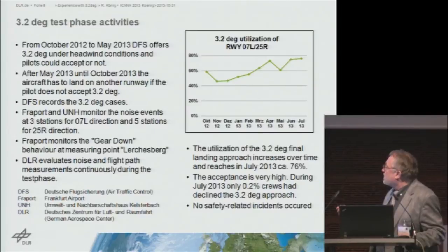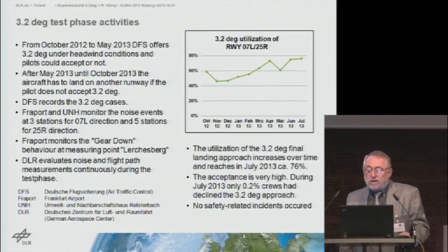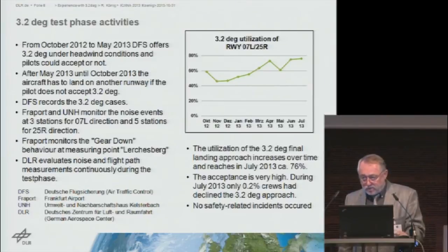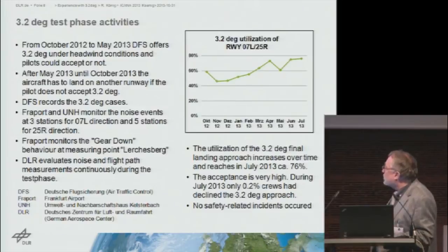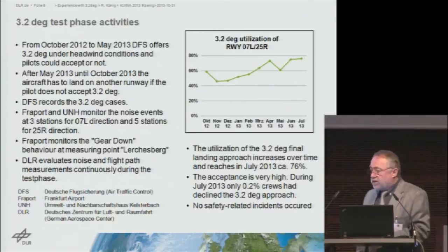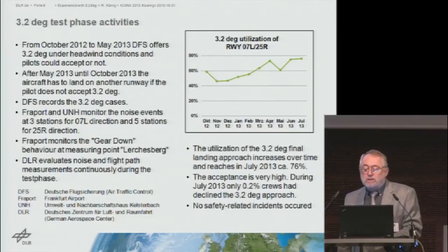Using the 3.2-degree angle, in terms of the percentage points, DFS did not offer 3.2 degrees in certain weather conditions — 3.2 degrees are only flown under CAT-1 conditions. In the beginning it was 60 percent, then a decline possibly due to weather conditions from April to May, but it increased overall from 60 to almost 80 percent in July. We only have data up until July of this year.